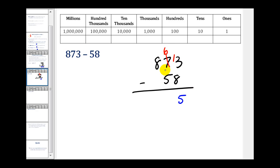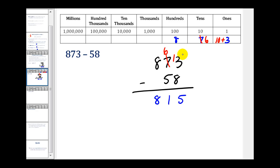Then we have six minus five in the tens column, which is one, and we still have the eight in the hundreds column. So 873 minus 58 equals 815. To illustrate this borrowing with a place value chart: 873 means three ones, seven tens, and eight hundreds. When we borrowed one from the tens column, the seven changed to six, but we were really borrowing ten, so the ones column became ten plus three, or thirteen.